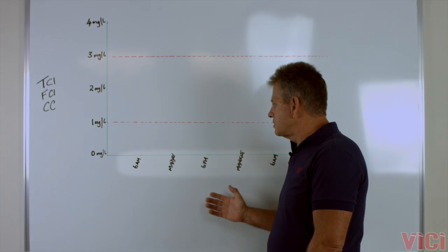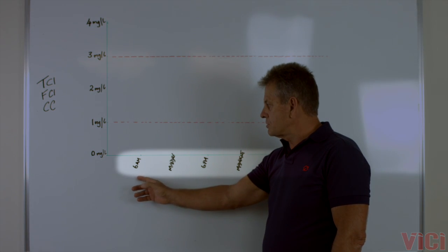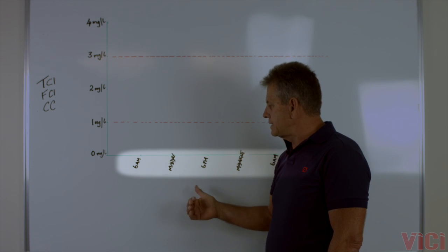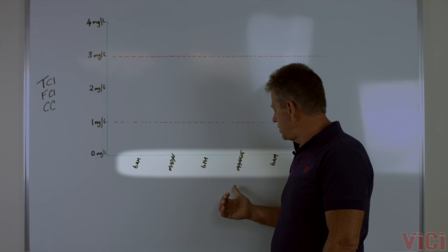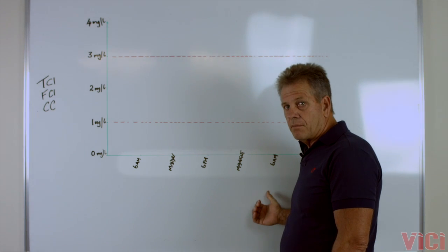Now to do that, we're going to look at a 24-hour period in your swimming pool starting at 6 a.m. in the morning, traveling through to midday, 6 p.m. at night, to midnight, and to 6 a.m. the following morning.